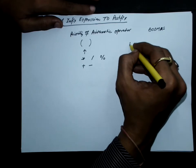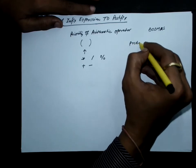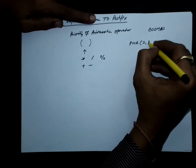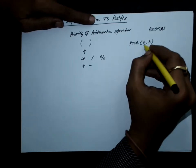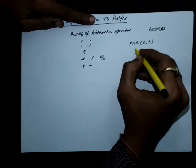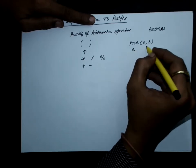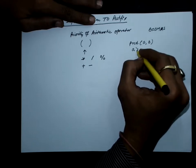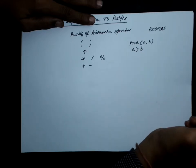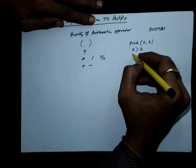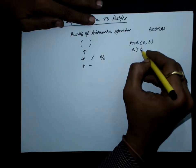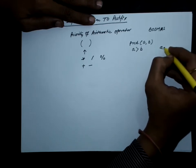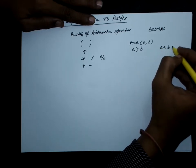Now let us design a function called PRCD, which is a precedence function. Two parameters A and B are passed to this precedence function — both A and B are operators. This precedence function will return true or false: it will return true if operator A is of higher precedence than operator B, and it will return false if operator A has less precedence than operator B.